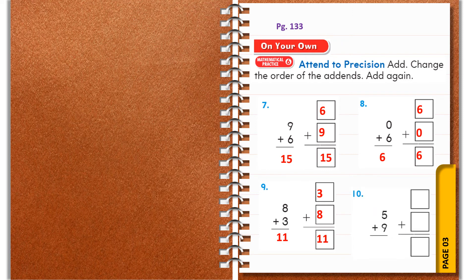Tenth one: five plus nine. Drop five counters and add nine more counters to it — you get fourteen. Change the order: nine plus five is again equal to fourteen.